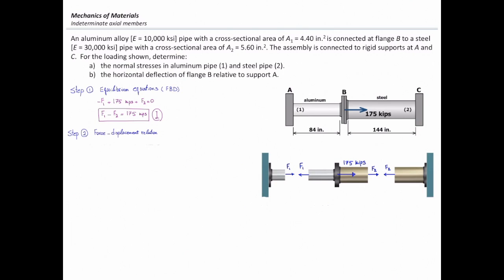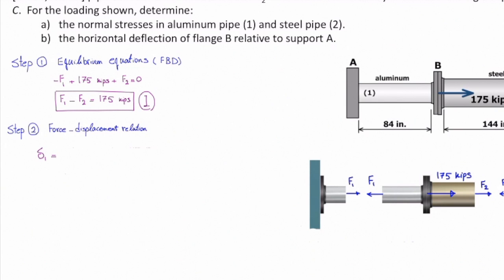Step number two, write down all deformations as a function of force. So delta one is FL divided by EA. Ok, everything but F is known. I'm going to plug the values.